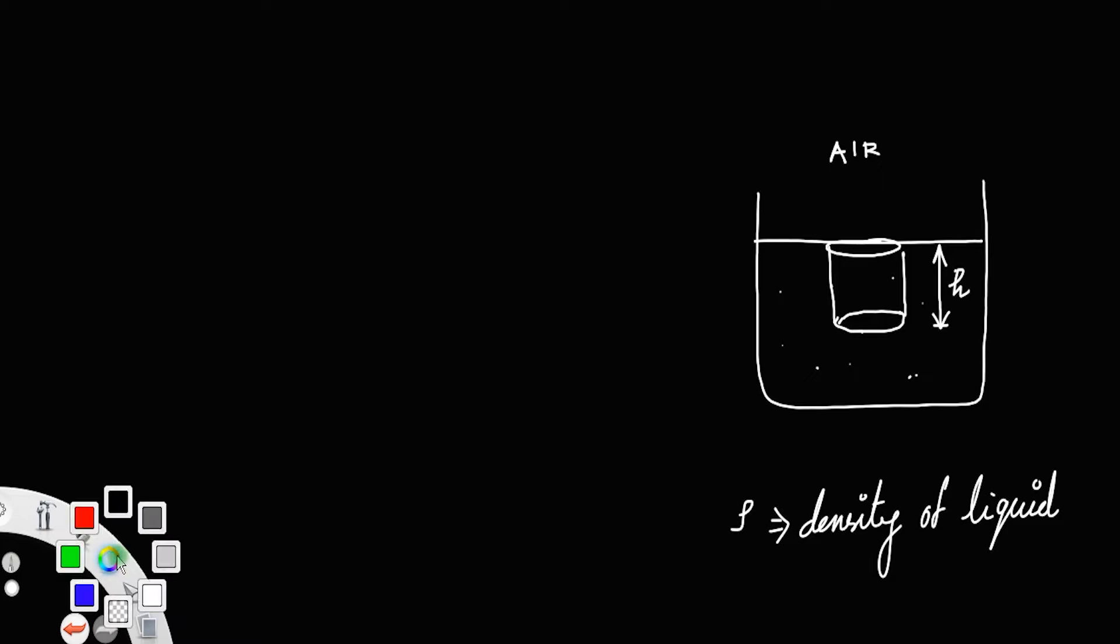The different forces acting on the liquid column are: one, let us call that F_a, the force due to the air on the top surface; and at the bottom, let us call that F, the force due to the liquid.